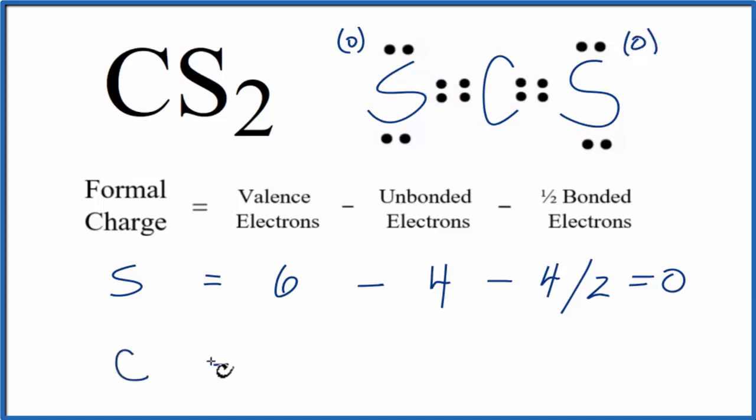Carbon, that's in group 14, sometimes called 4A. It has 4 valence electrons. We'll subtract the unbonded. All of these electrons, they're involved in chemical bonds. They're between atoms. So we don't have any unbonded electrons for carbon.